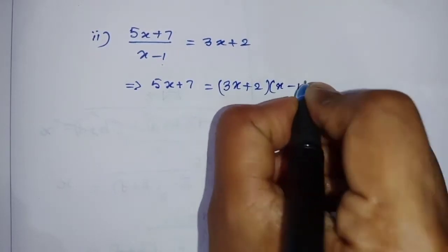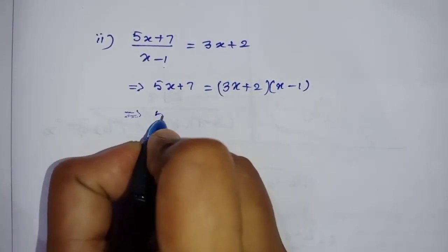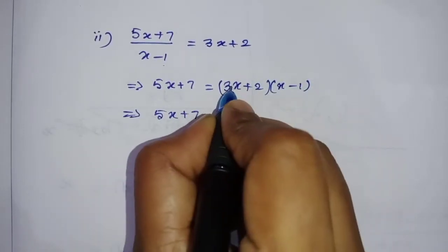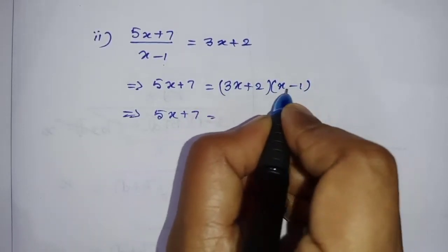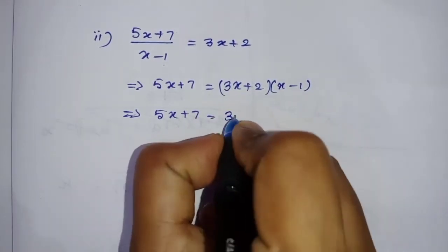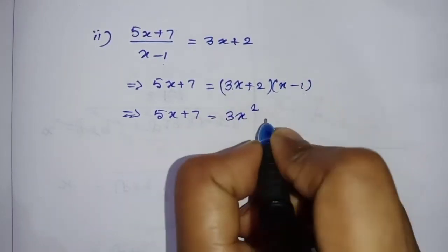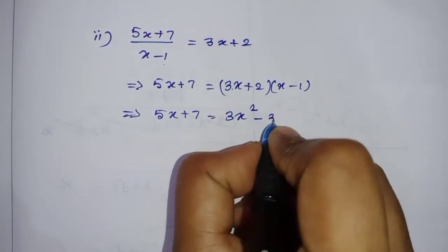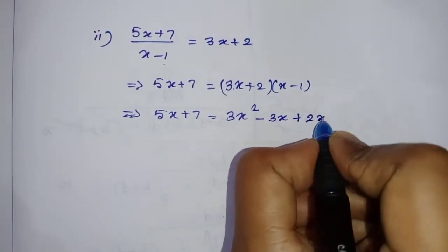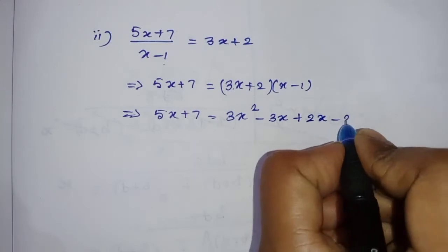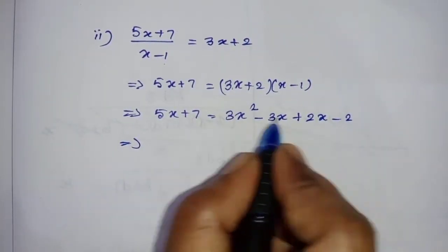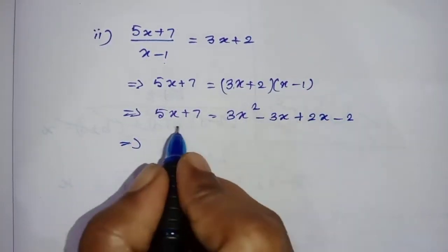Multiplying out: 5x + 7 equals 3x times x which is 3x², plus 3x times minus 1 which is minus 3x, plus 2 times x which is 2x, plus 2 times minus 1 which is minus 2. Now bring all terms to one side to set the equation equal to zero.